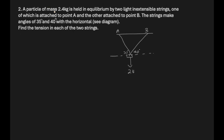Question 2: A particle of mass 2.4 kg (weight = 24 N downward) is held in equilibrium by two light inextensible strings attached to points A and B, making angles of 35° and 40° with the horizontal. We need to find the tension in each string.